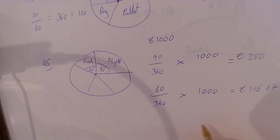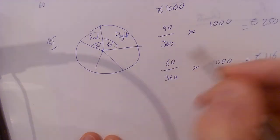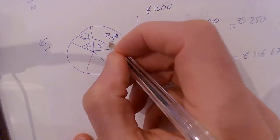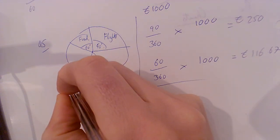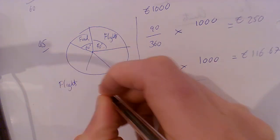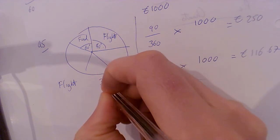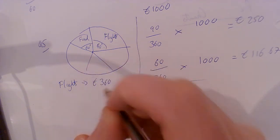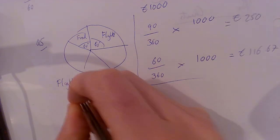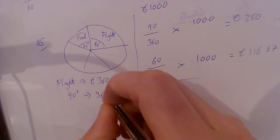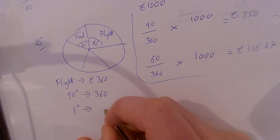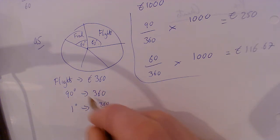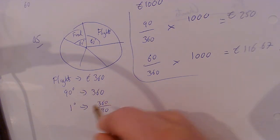Now double-check that. That's how you do that. If this said slightly different - if they said to you the flights cost 360, then you go: well, 90 degrees is 360. One degree is 360 divided by 90.